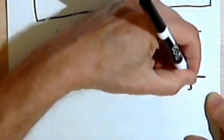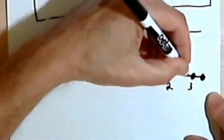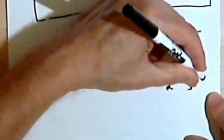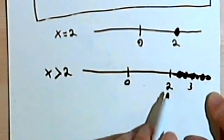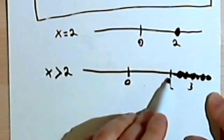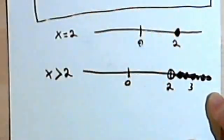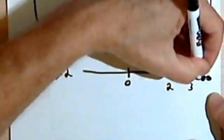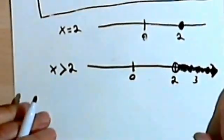Let's say this is a 3. I could draw a dark circle here, another dark circle over here, dark circles anywhere along here — but not at the 2, because x is greater than 2. And nowhere down here where it's less than 2. So I'm going to put in an open circle to show that I'm not including 2, and at the end of this line I'll put in an arrow to show that this could keep going all the way up to infinity.